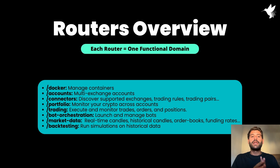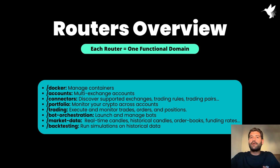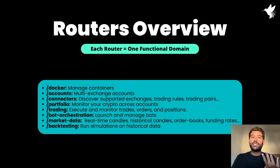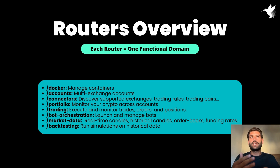Then we have the accounts router. Here you can create new accounts — by accounts I mean local accounts of the API. For example, a master account, a sub-account for client one, an account for client two, and so on. To each account you can also add credentials. For example, you can add the credentials of Binance for the master account.